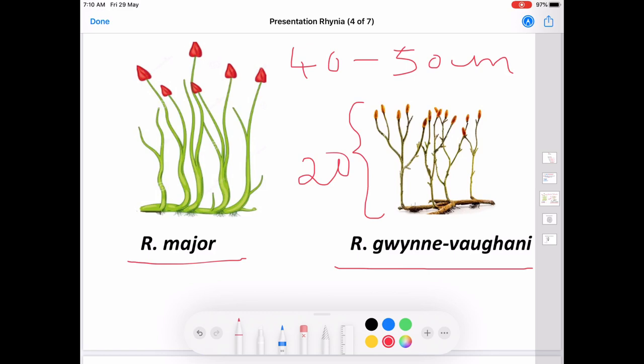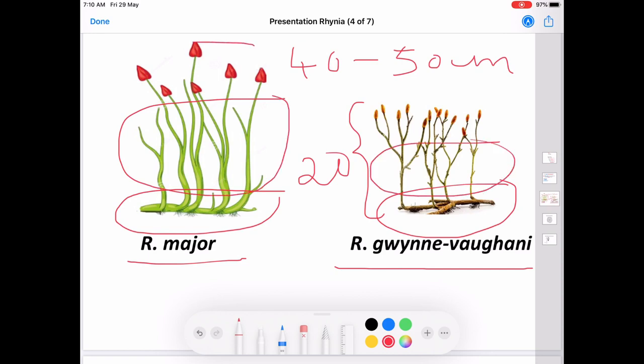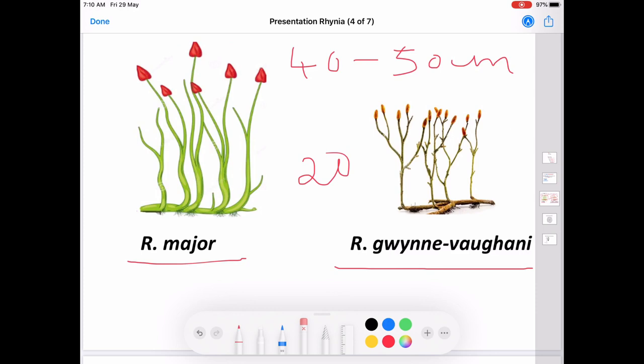Here you can see both the plants and both of them are having a rhizome. This is the aerial shoot. The plant carries a rhizome, an aerial shoot, and sporangia. The sporangia in both cases are terminal in position and are solitary.